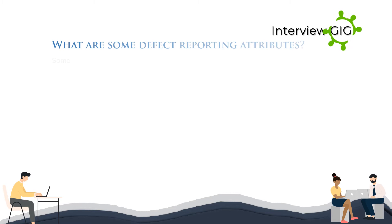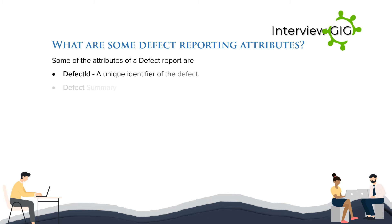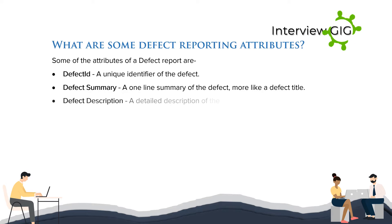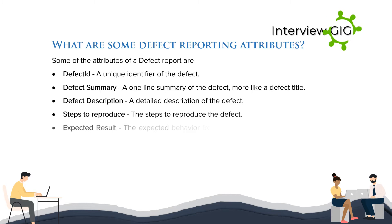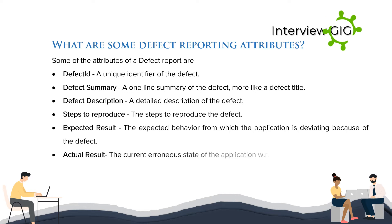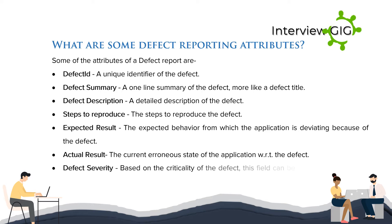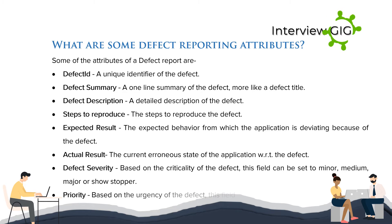What are some defect reporting attributes? Some of the attributes of a defect report are: defect ID — a unique identifier; defect summary — a one-line summary; defect description — a detailed description; steps to reproduce — the steps to reproduce the defect; expected result — the expected behavior; actual result — the current erroneous state; defect severity — set to minor, medium, major, or showstopper; and priority — set on a scale of P0 to P3.